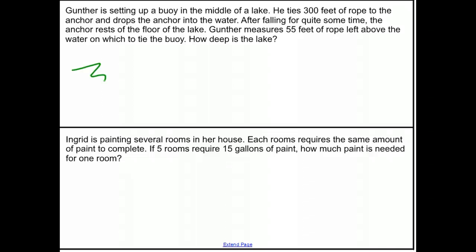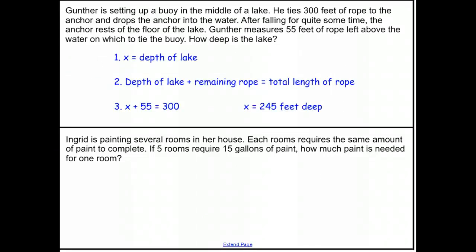Well, for the third one, the one where Gunter is setting up a buoy, the question at the end gives us our variable, how deep is the lake? Well, if he ties 300 feet of rope to the anchor and drops it, then the depth of the lake, plus the remaining amount of rope, has to equal the total because the rope is either in the lake or above the lake. In this case, the depth is x, the remaining rope is 55 feet, and 300 is the total amount of rope that we have. In that case, x is equal to 245 feet, which gives us the depth of the lake.